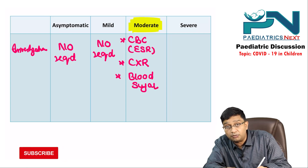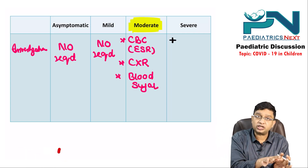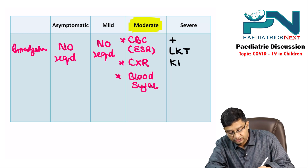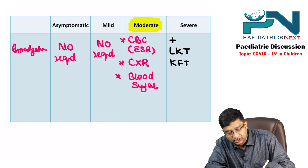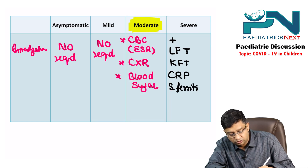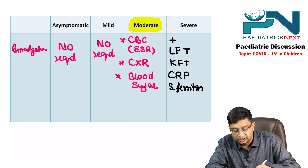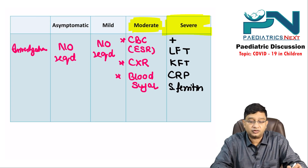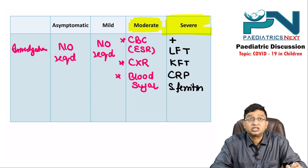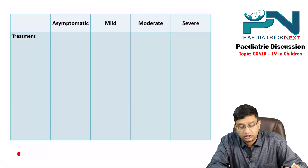In severe cases, all investigations done for moderate are required, plus LFT (liver function test), KFT (kidney function test), CRP, and serum ferritin. These are the investigations recommended by the Ministry of Health and Family Welfare guidelines for severe COVID-19.